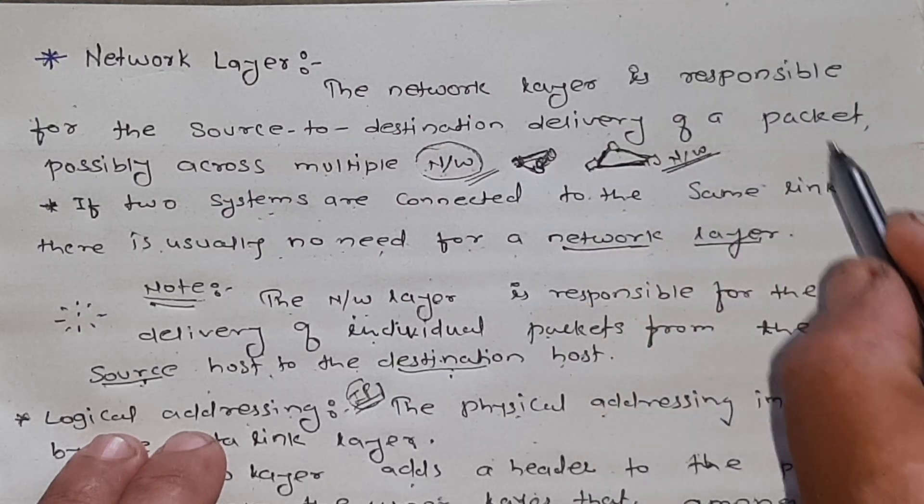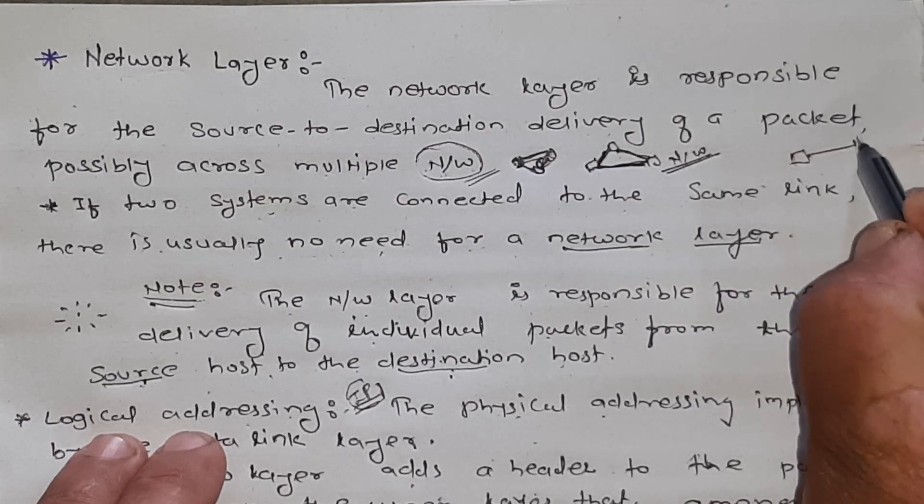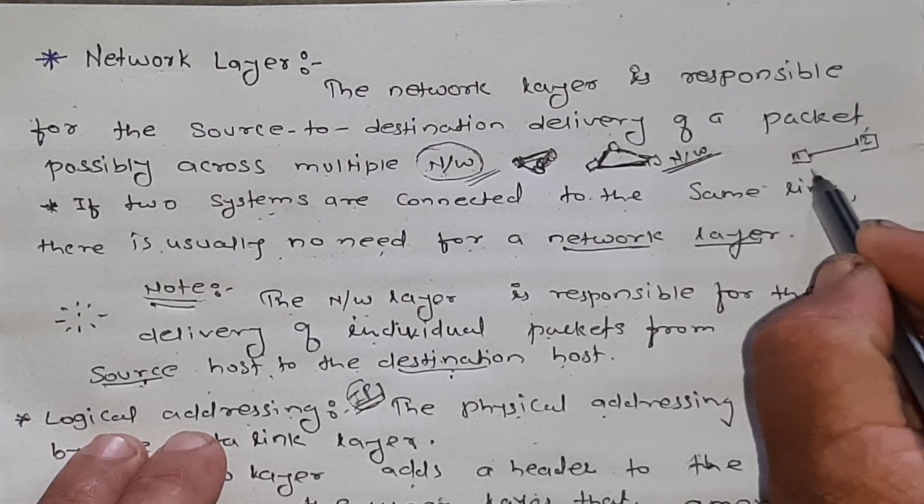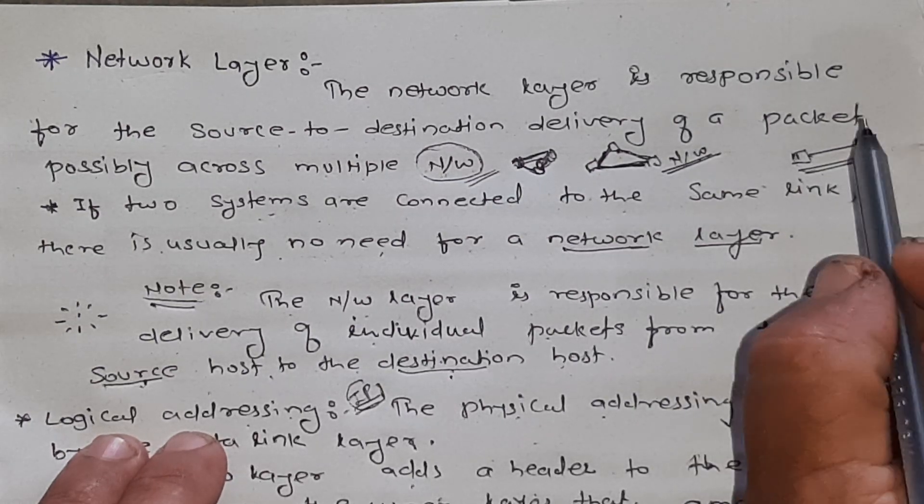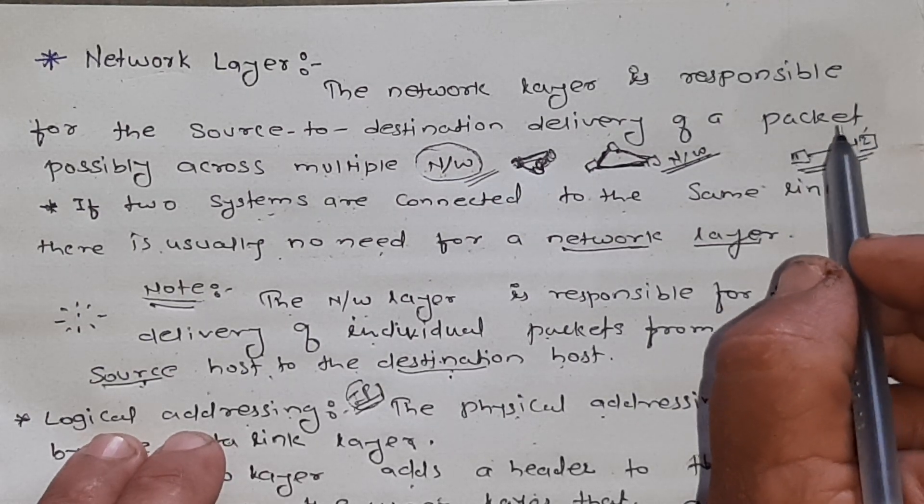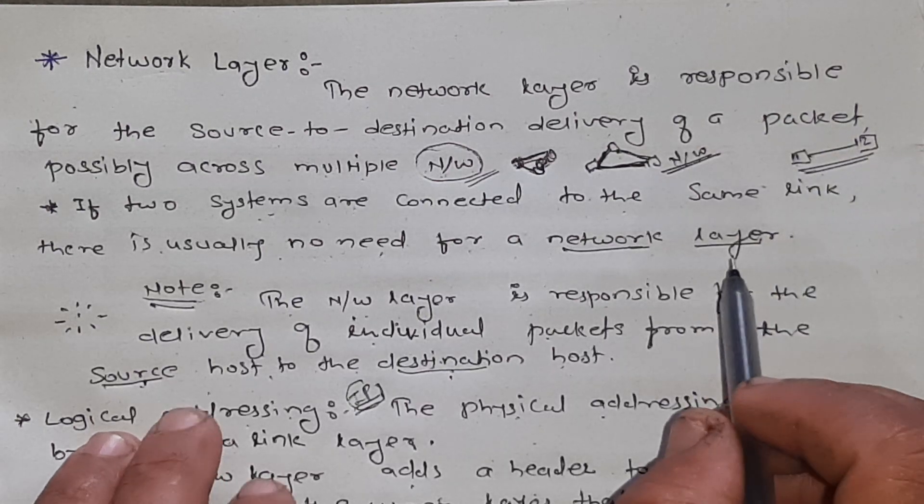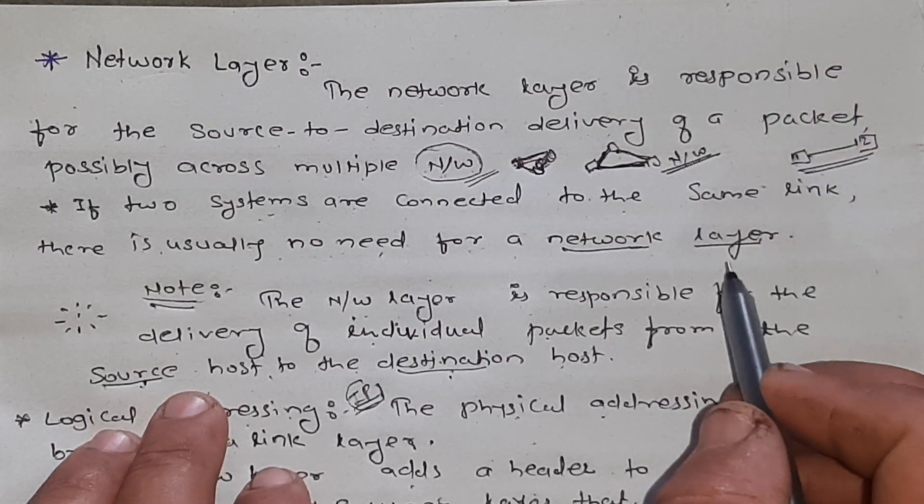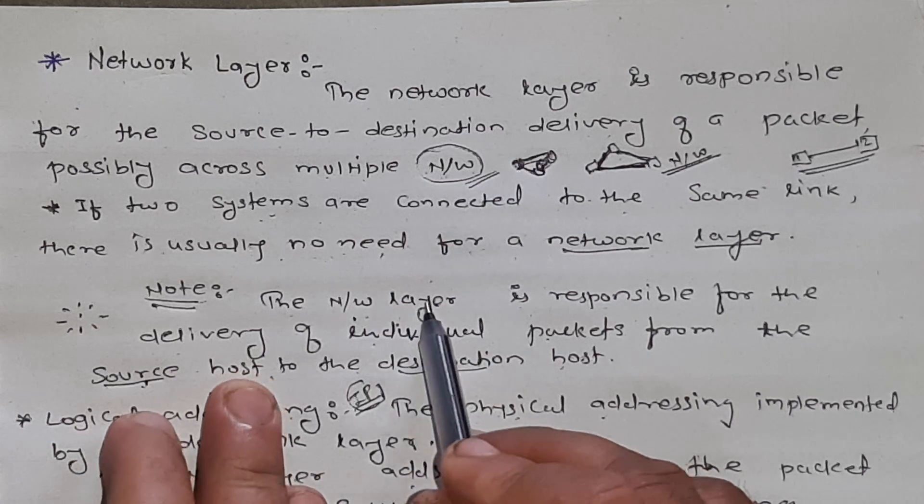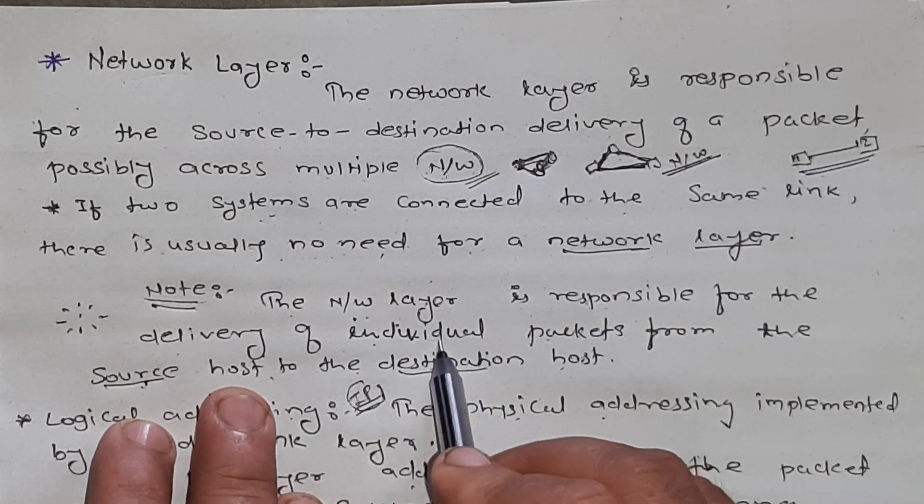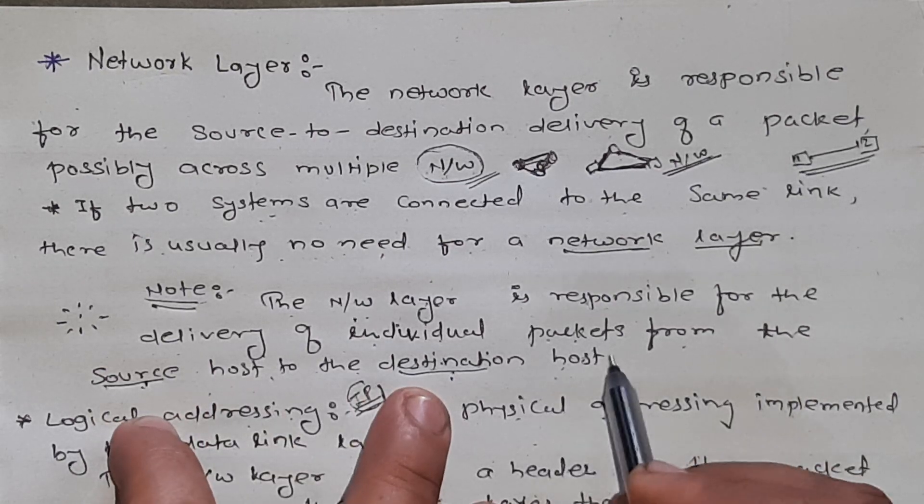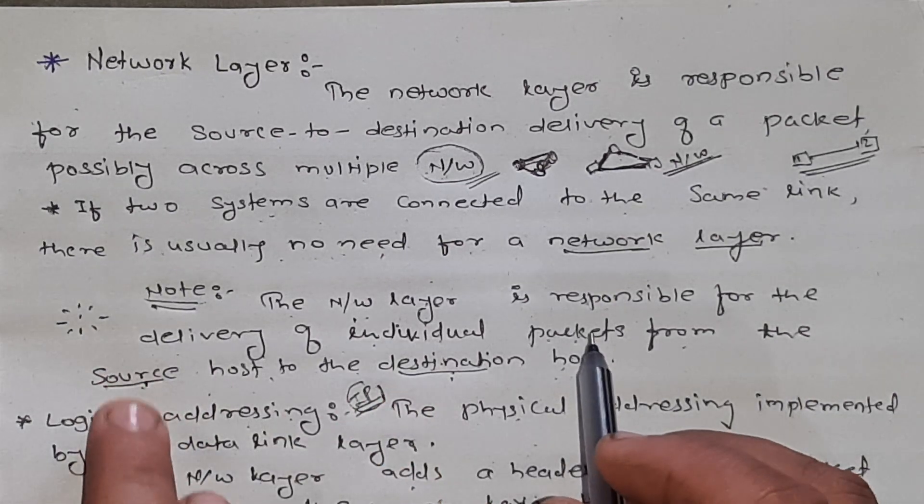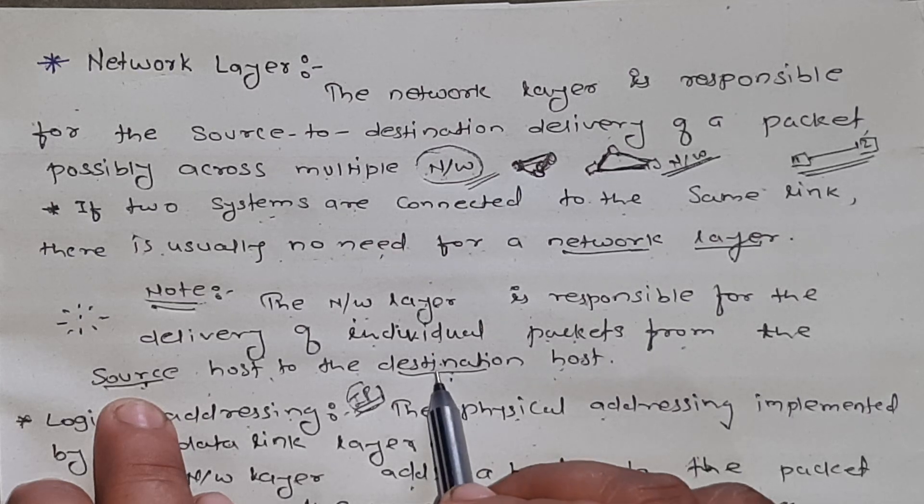But if there are two systems, like system 1 and system 2, there is no need for network layer here. So, we will see that the network layer is responsible for delivery of individual packets from the source host to destination host. So, source or sender or destination or receiver.